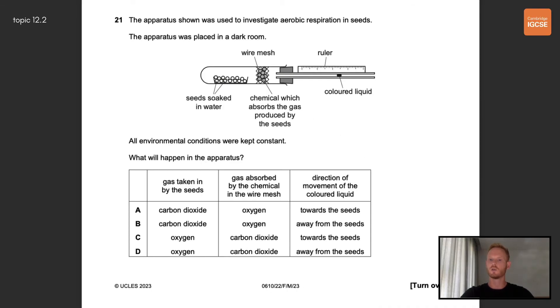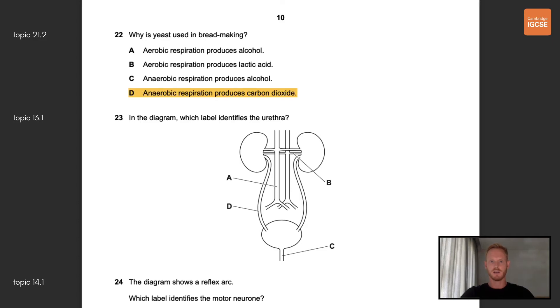Number 21, the apparatus shown was used to investigate aerobic respiration in seeds. What will happen in the apparatus? The seeds are respiring aerobically, which means they're using up oxygen and releasing carbon dioxide. The first column, gas taken in by the seeds, is therefore oxygen and the second column, gas absorbed by the chemical in the wire mesh, is carbon dioxide. Now because oxygen is used up and carbon dioxide is absorbed, the volume of gas in the boiling tube will decrease, causing the coloured liquid in the glass tube to move towards the seeds. The correct answer is therefore C. Number 22, why is yeast used in bread making? The correct answer here is D. Anaerobic respiration in yeast produces carbon dioxide, which forms air bubbles in dough, causing bread to rise.